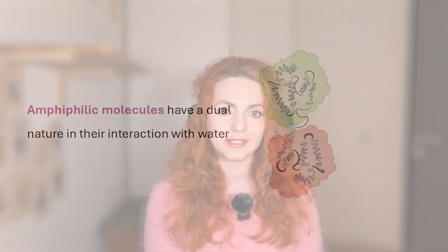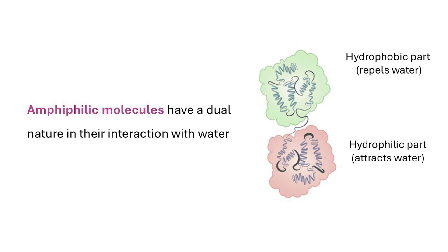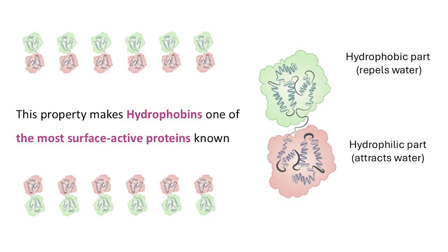To overcome these challenges, fungi produce hydrophobins, a unique family of small amphiphilic proteins. Amphiphilic molecules have a dual nature in their interaction with water. One part of the molecule is hydrophilic, meaning it interacts with water, while the other is hydrophobic, meaning it repels water. This property makes hydrophobins one of the most surface-active proteins known.